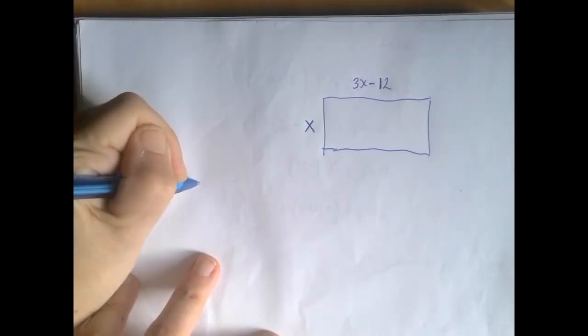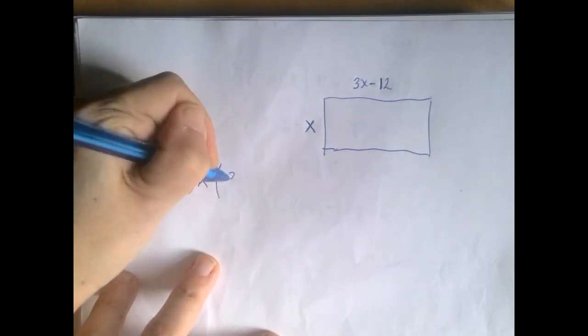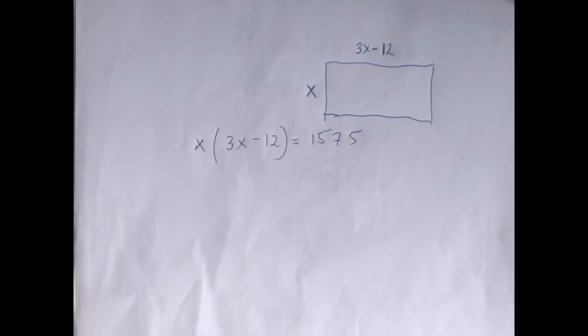The area is given to be 1575 square inches. So the equation we can write is that one side times the other is the given area. So now the word problem is over, and we just have a quadratic equation to deal with.